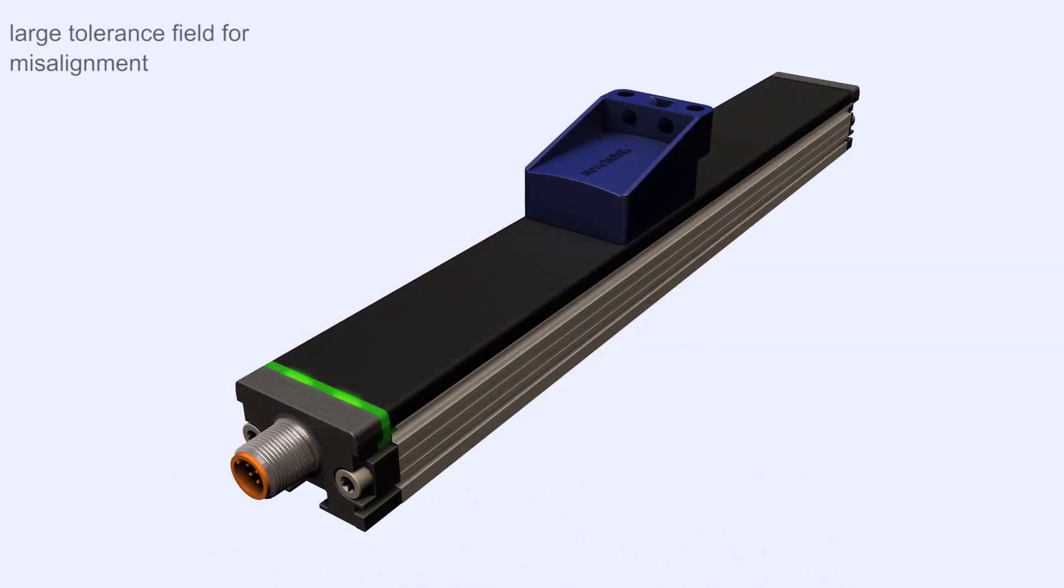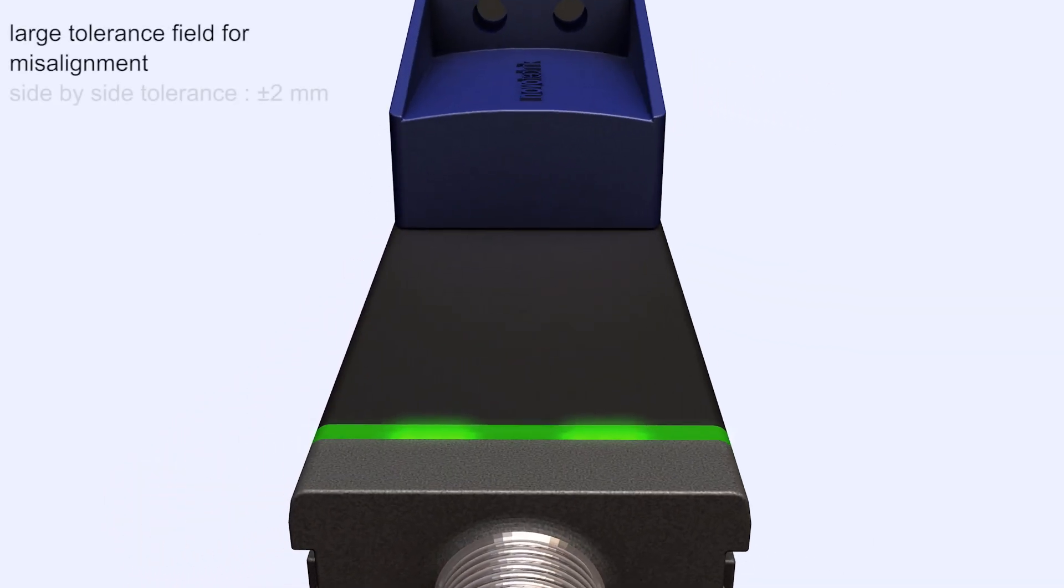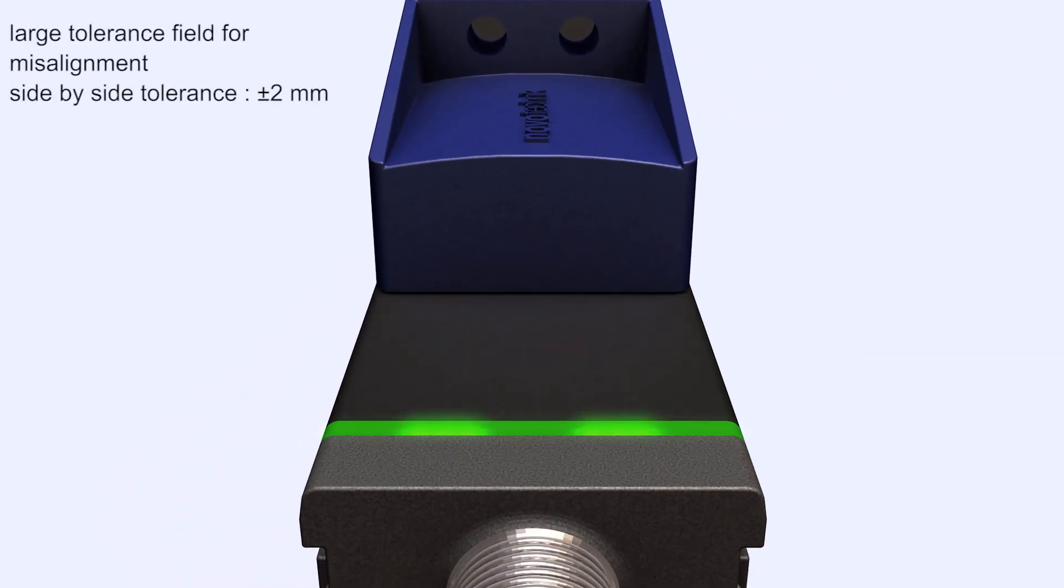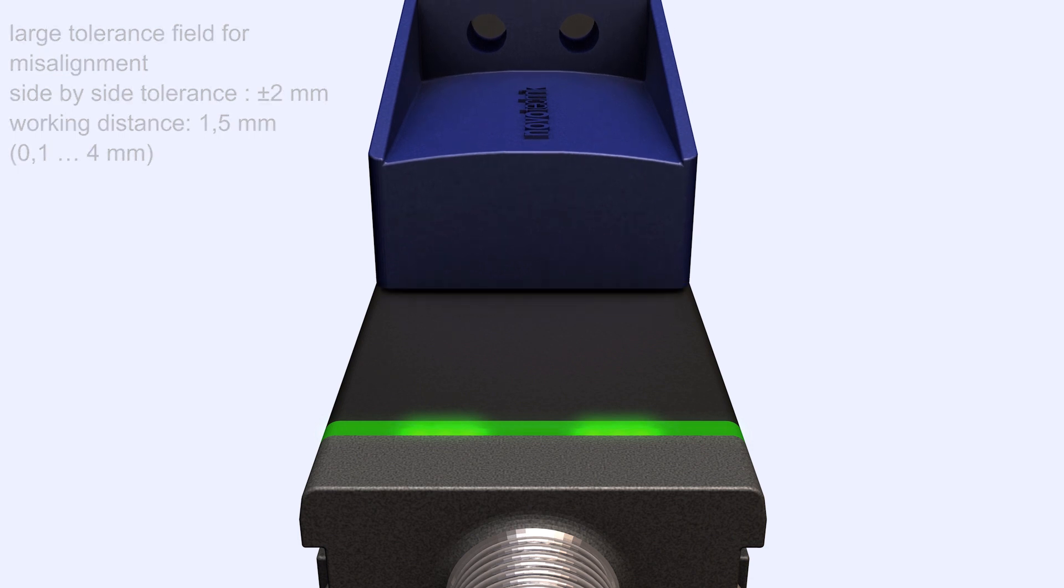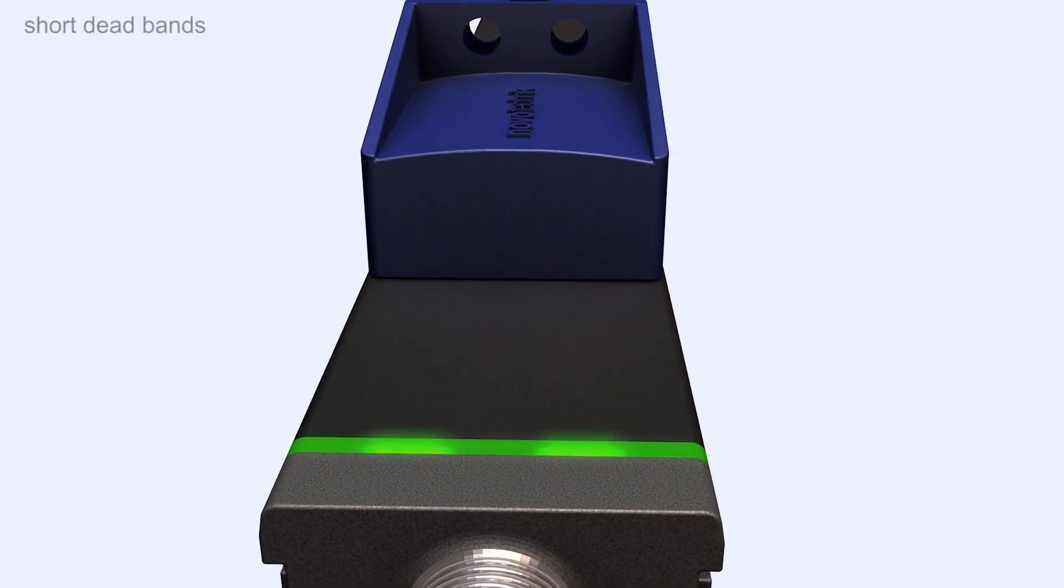The sensor tolerates a side-to-side misalignment of 2 millimeters. The working distance between sensor and position marker is wide with a range of 0.1 to 4 millimeters.